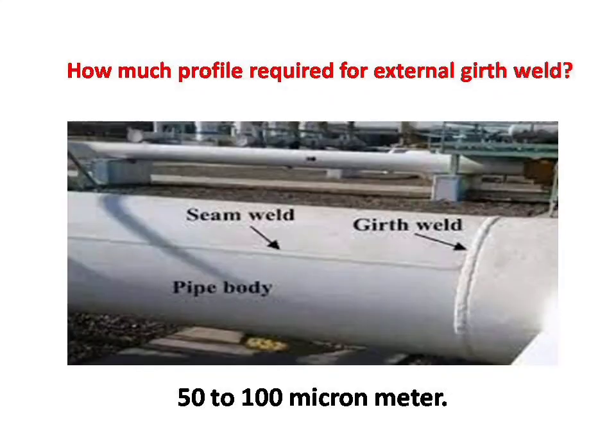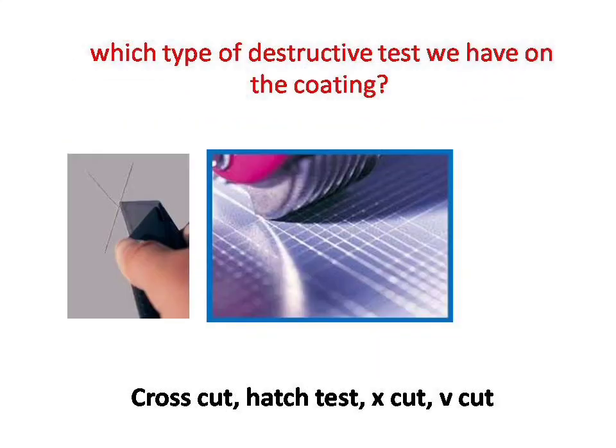Next question: how much surface profile is required for an external girth weld? Answer is: 50 to 100 micrometers. Next question: which types of destructive tests do we have for coating? Answer is: cross cut, hatch test, X cut, and V cut.